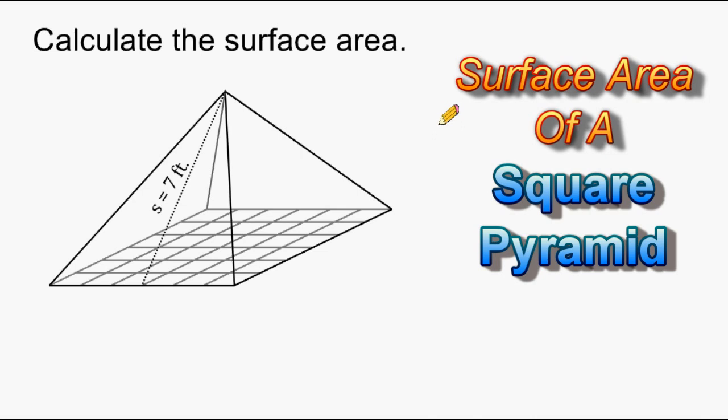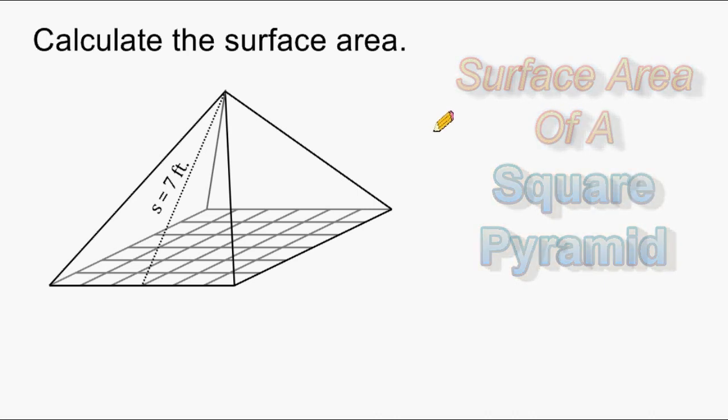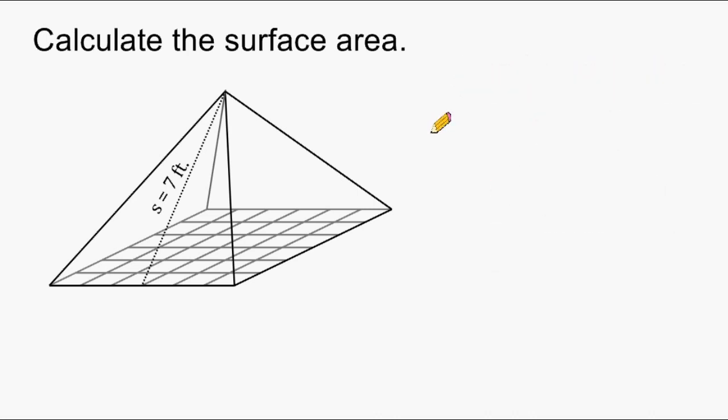What we have here is a square pyramid, and what we have to do is figure out its surface area. Now, a square pyramid is really just composed of one square and four congruent triangles.